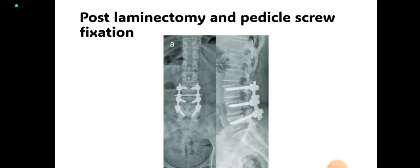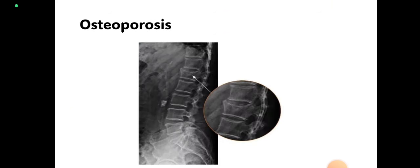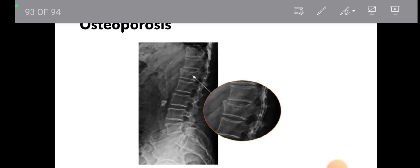So it was all about lumbar spine x-ray interpretation. We discussed four views: frontal view, lateral view, oblique view, and flexion-extension view. That was all about lumbar spine x-ray interpretation. Thank you.